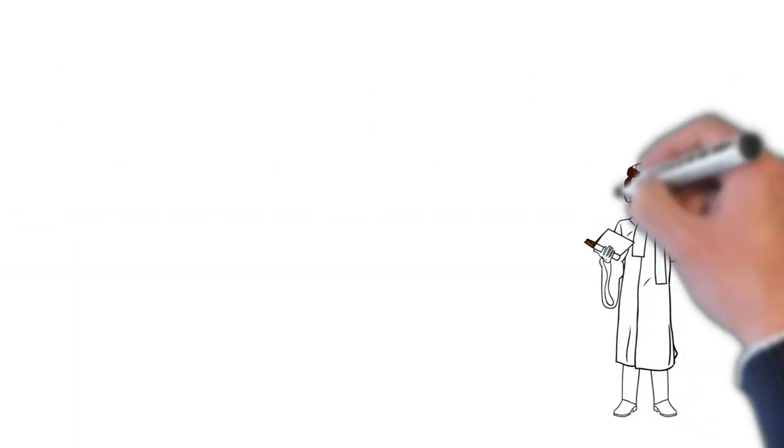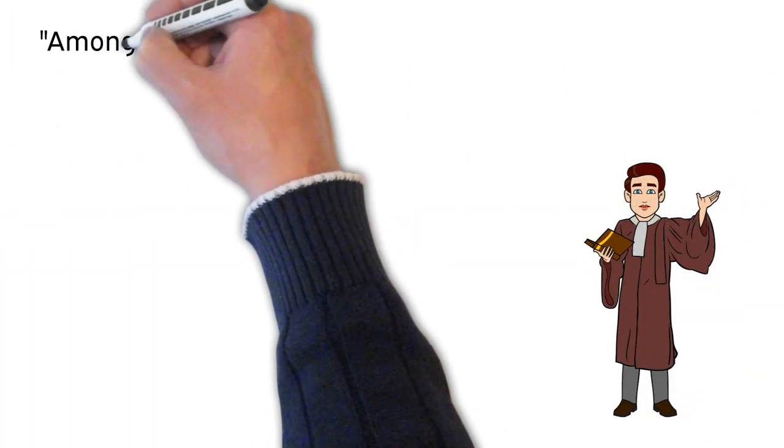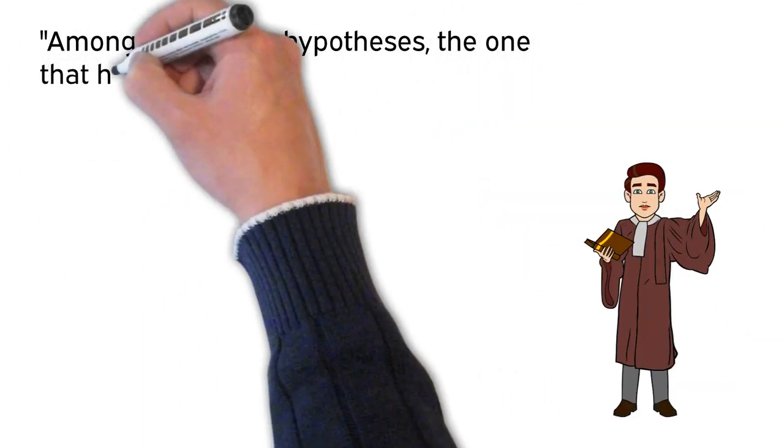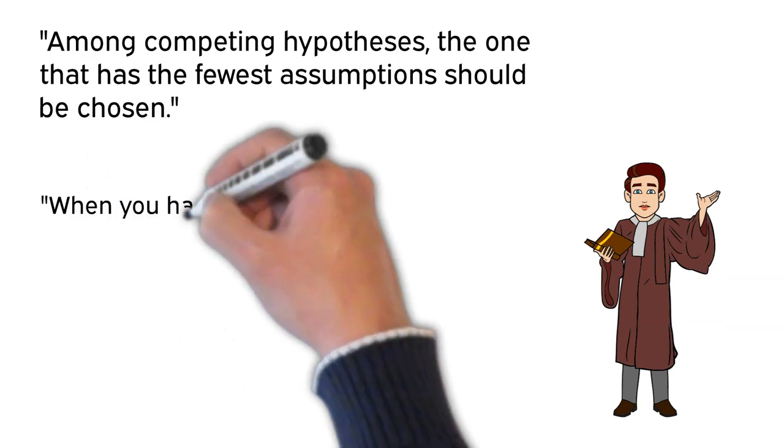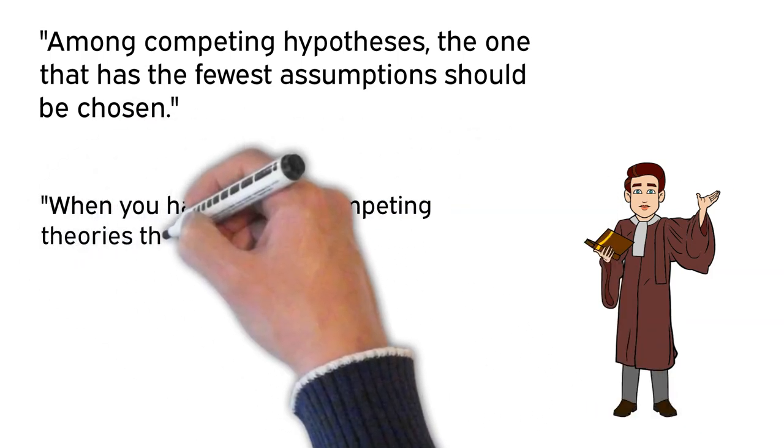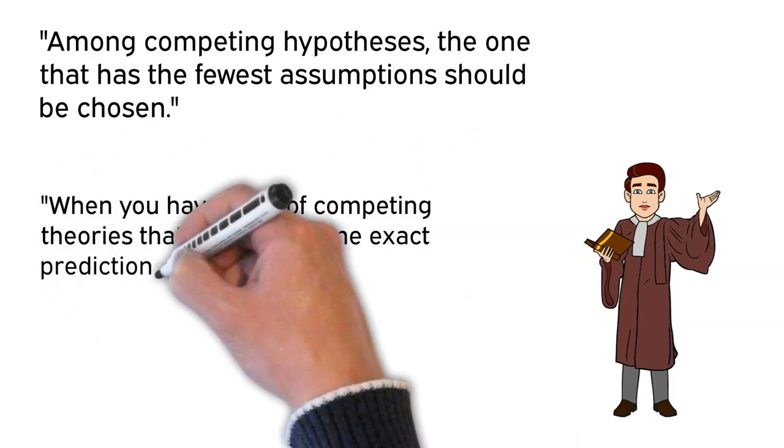This has been simplified in modern times to meanings such as: among competing hypotheses, the one that has the fewest assumptions should be chosen, or, when you have a set of competing theories that make the same exact predictions, the simpler one is the better one.